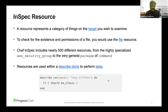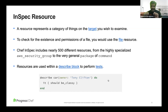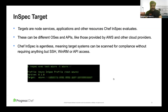An InSpec resource represents a category of things you want to test. For example, 'describe package(package_name) { it { should_not be_installed } }' — here the package is the resource. Chef has curated 500-plus resources ranging from general aspects to AWS, GCP, and Azure resources. These resources are used in AWS, GCP, and Azure benchmarks.